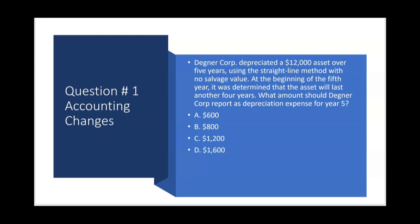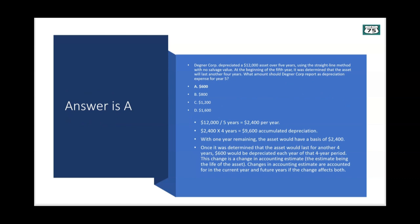You'll have to calculate both the old depreciation already taken and, based on the new book value, the depreciation for the current year. Degner Corp depreciated a $12,000 asset over five years using the straight-line method with no salvage value. At the beginning of the fifth year it was determined that the asset will last another four years. They originally divided $12,000 by five years and did that for four years. They want to know depreciation expense for year five, the year of change.